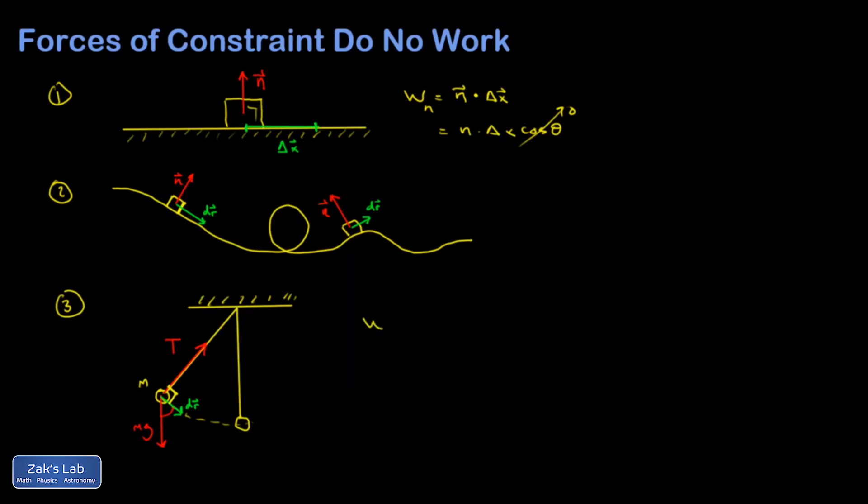The work done by the tension will be given by the tension dot product the displacement delta r. That's the magnitude of the tension times the magnitude of that little displacement increment times the cosine of the angle between them. But again, theta is 90 degrees between the constraint force and the direction of motion, so I'm going to get zero.